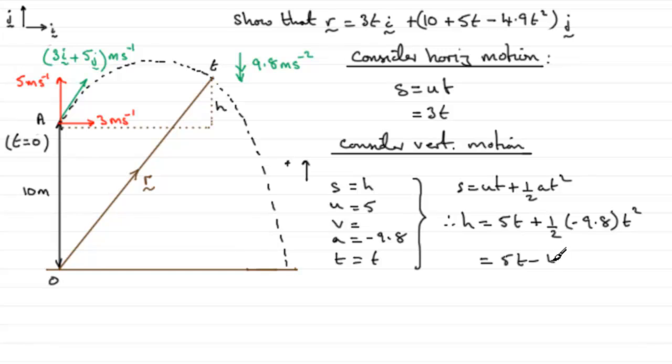Now that is the height above A, but we want the position vector r, which involves the height above O. So it's going to be 10 plus h. So therefore we can see that the height above O is going to equal 10 plus this value here, 5t minus 4.9t squared.